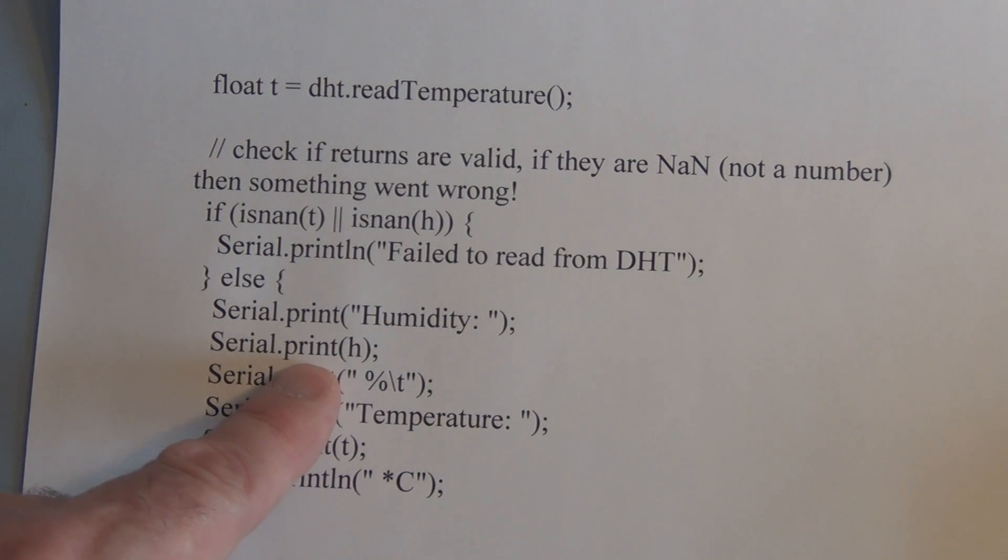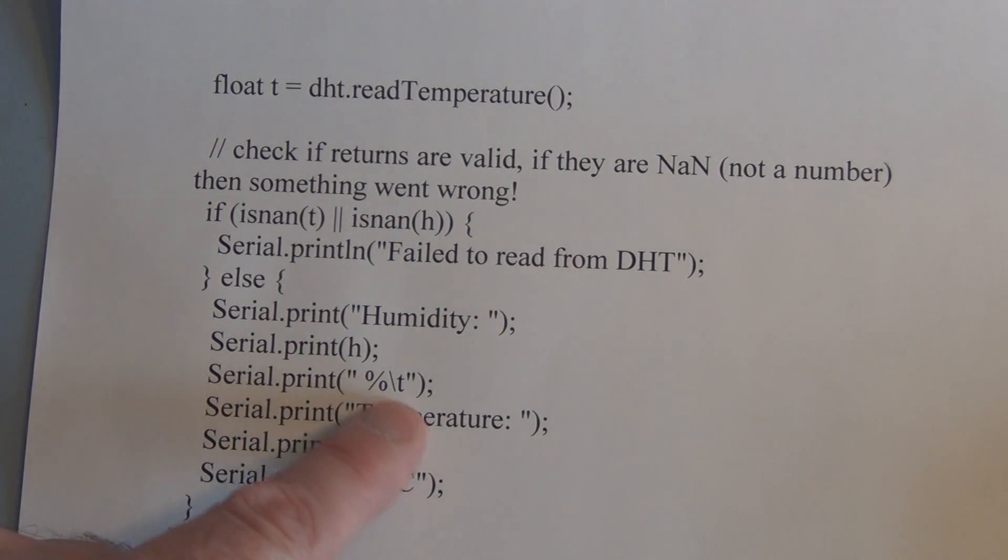Humidity. And then it prints the value in H. And then we do a serial print. Temperature. And we print what the value is in C. And that continues that loop.